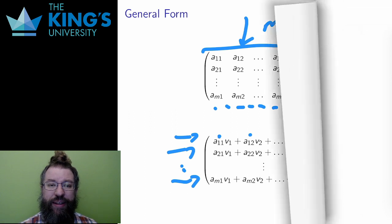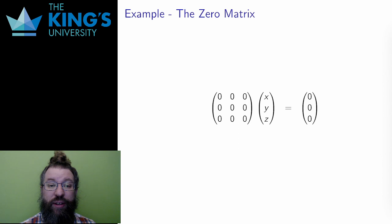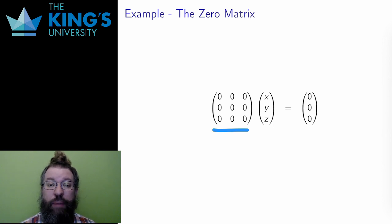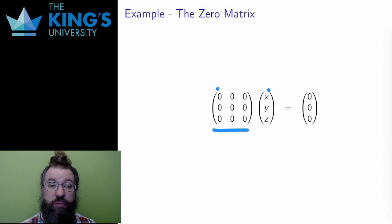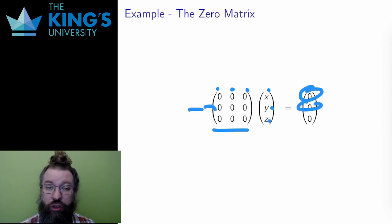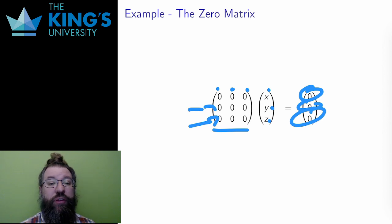Note n and m carefully: a matrix acts on vectors of length n (the number of columns), and the output is a vector of length m (the number of rows). Now let's get more concrete with some important examples. First, the zero matrix — the matrix of all zeros. Since every entry is zero, all multiplications are zero and the result is the zero vector. The zero matrix sends everything to the zero vector. This is a valid linear transformation, even though it collapses everything to a single point.